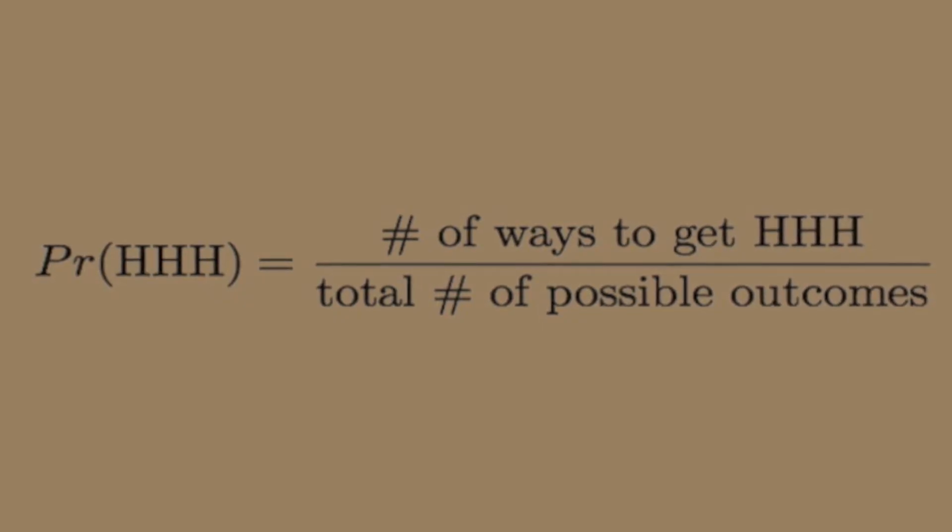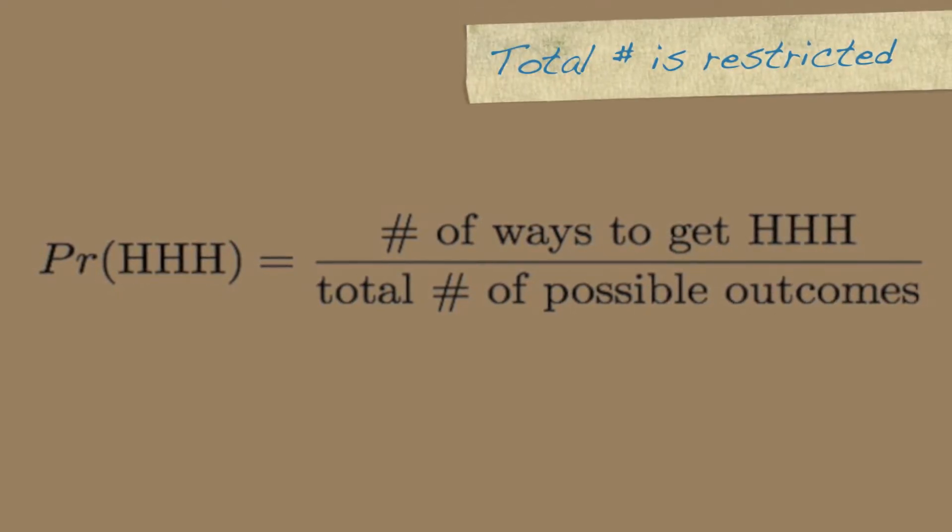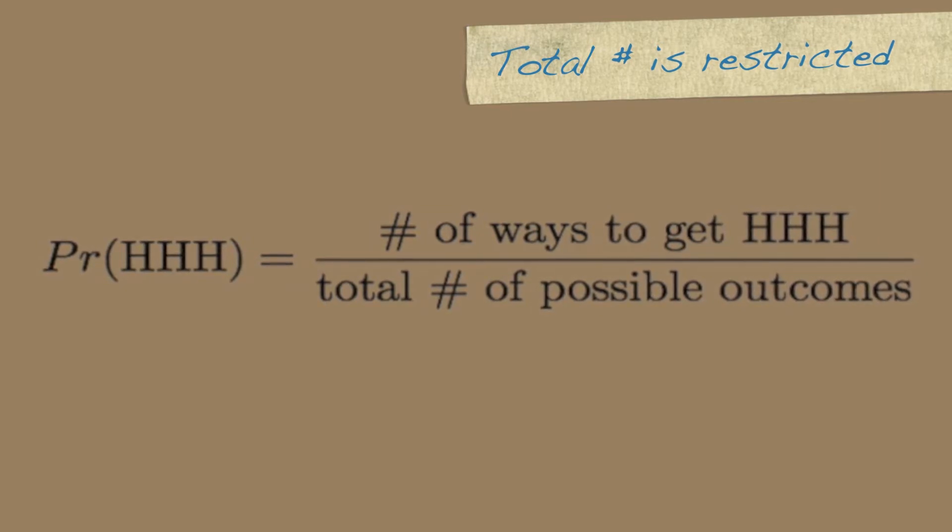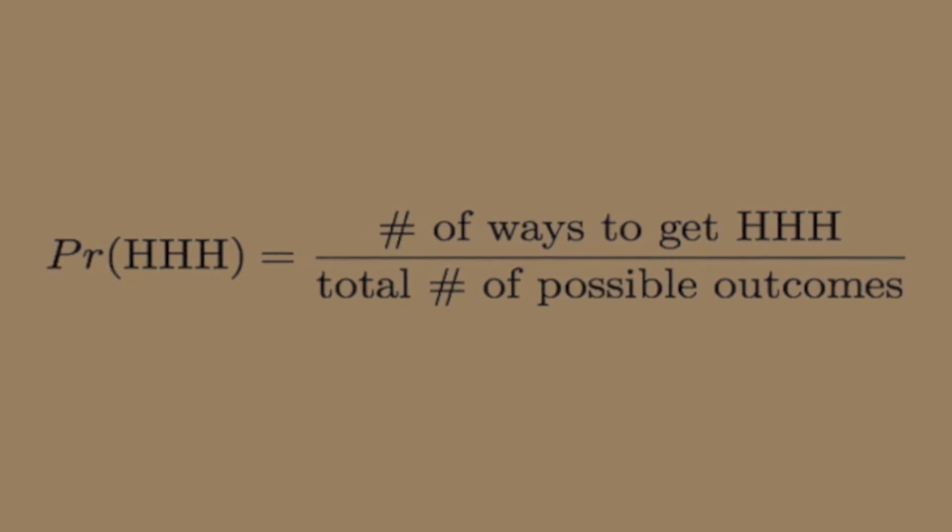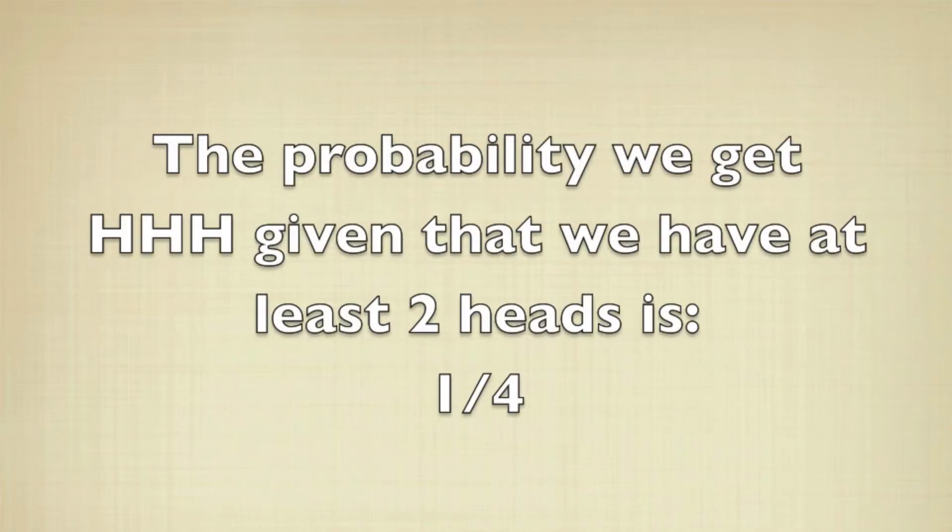We're going to use a normal quotient to compute this probability, but the thing to keep in mind is that the total number of possible outcomes is restricted. Since we have to have two heads, outcomes like tails, tails, tails is not permitted. The only possible outcomes are these four here, which means that the probability that we get HHH is one out of four.